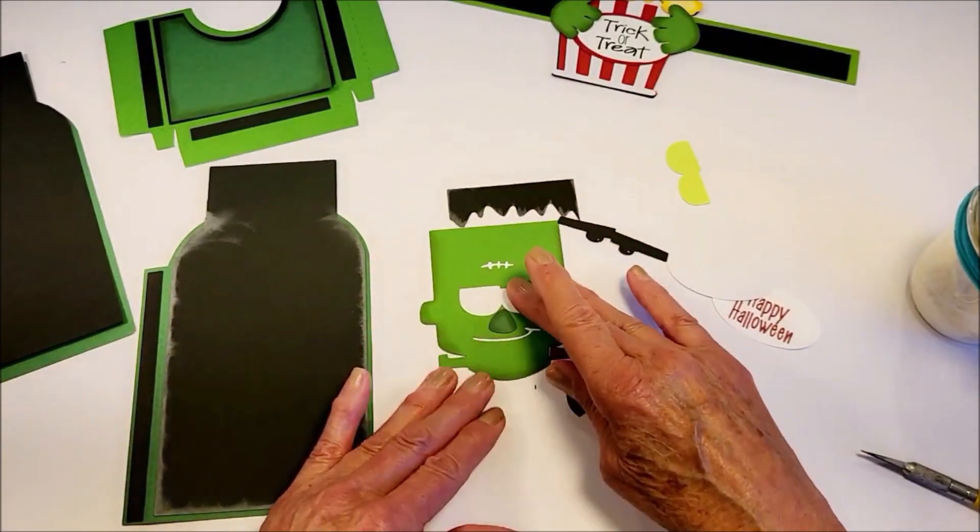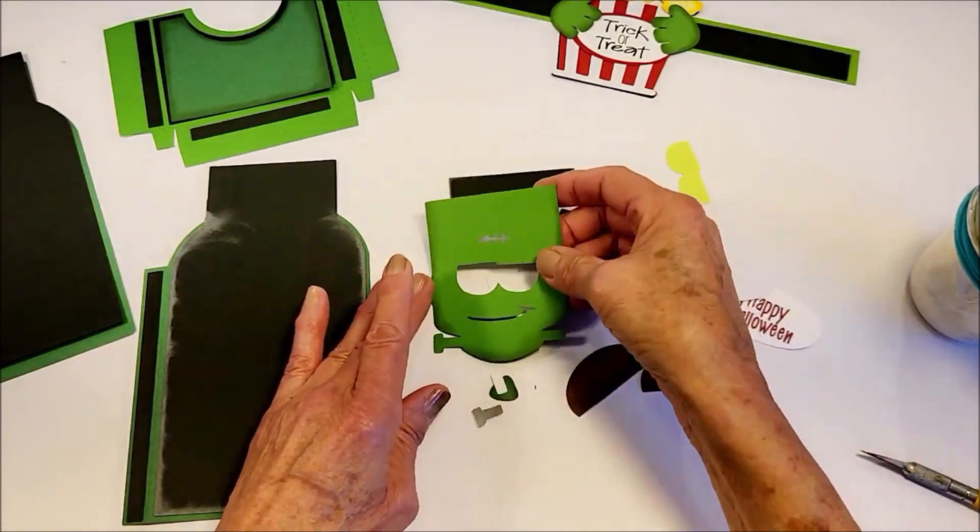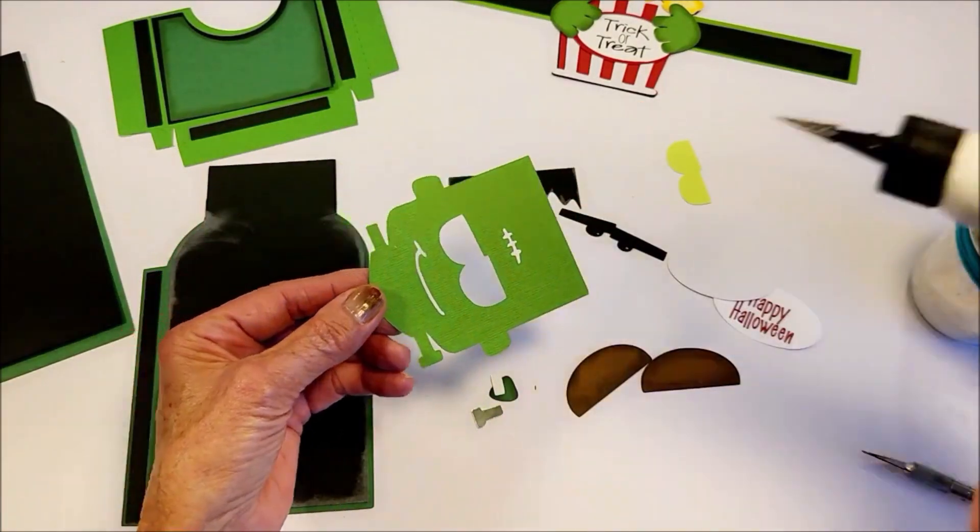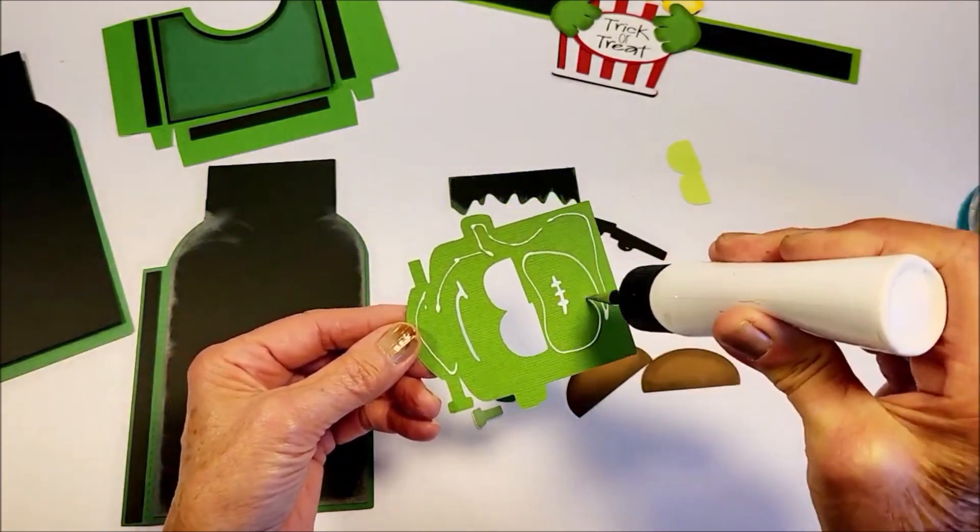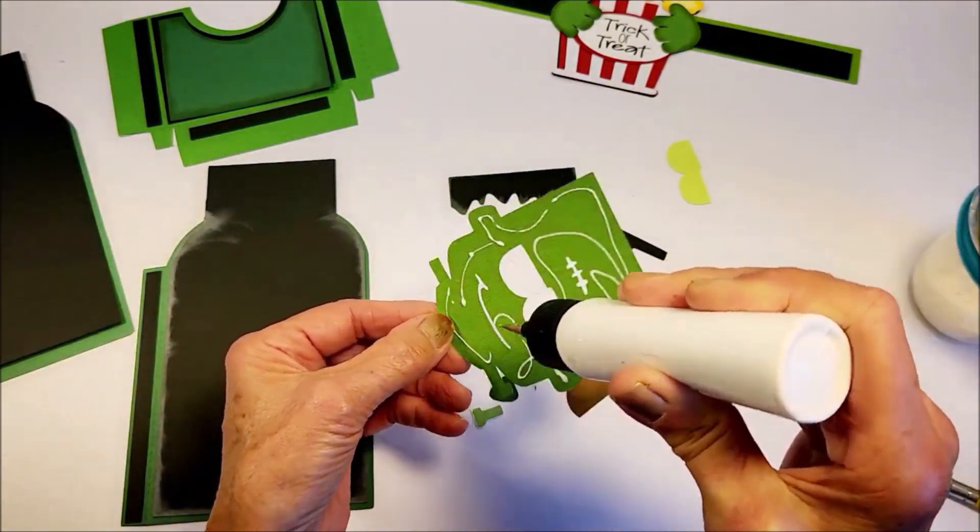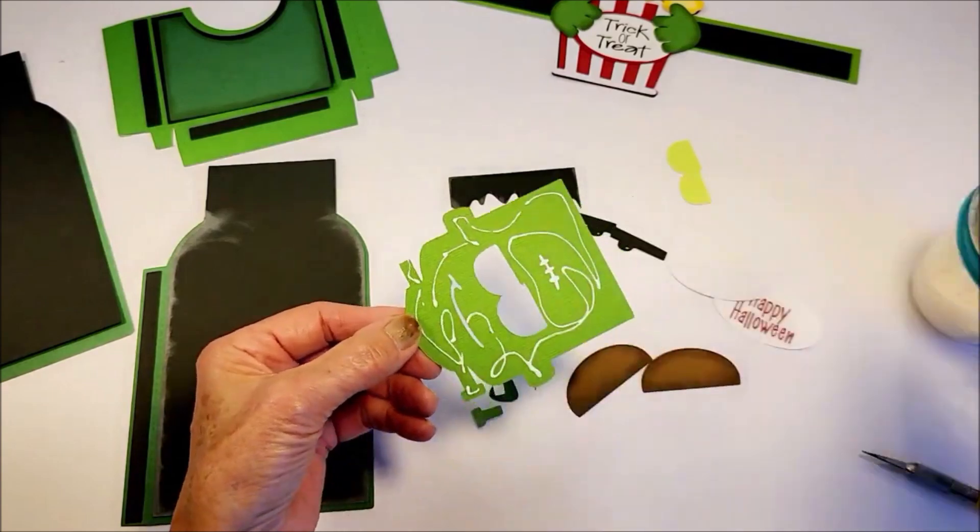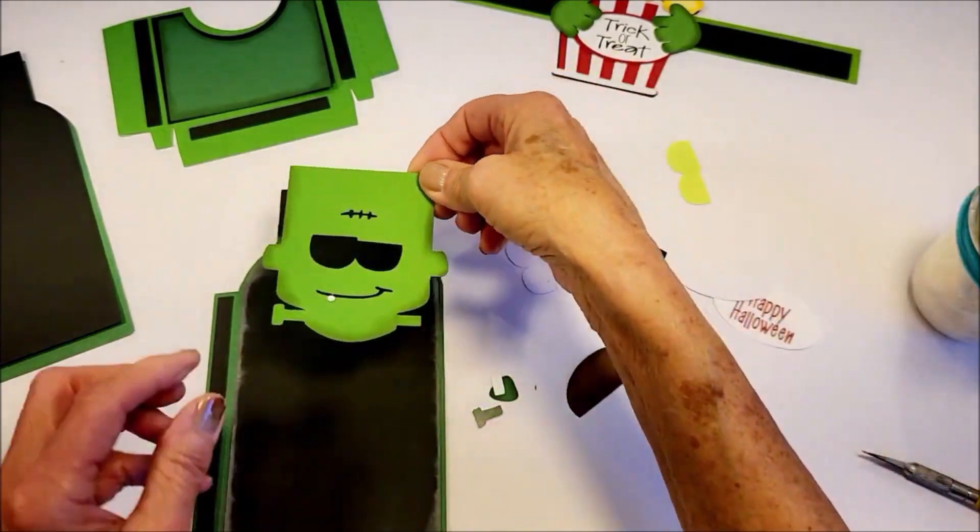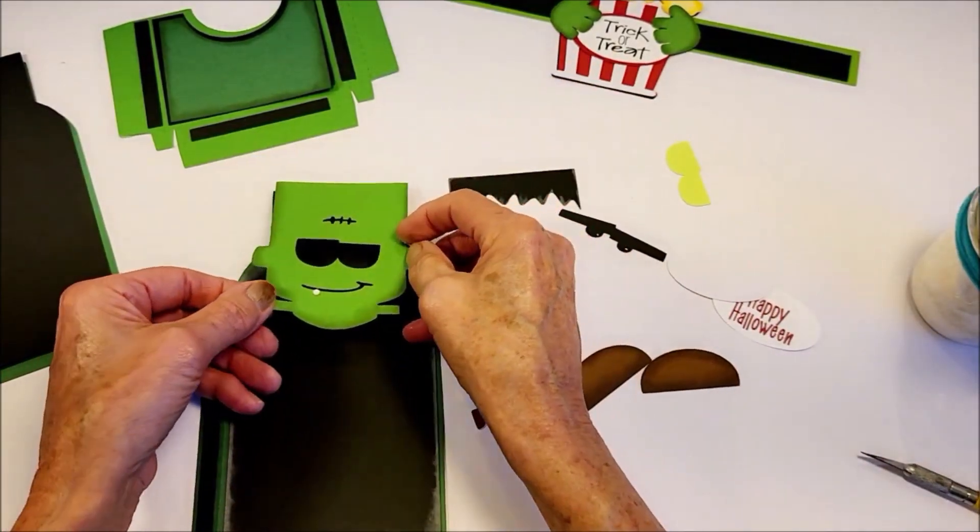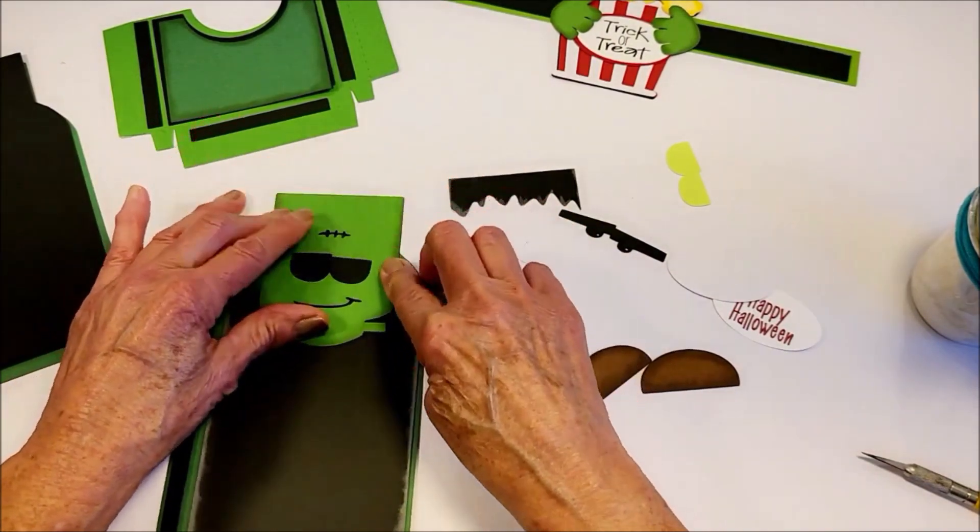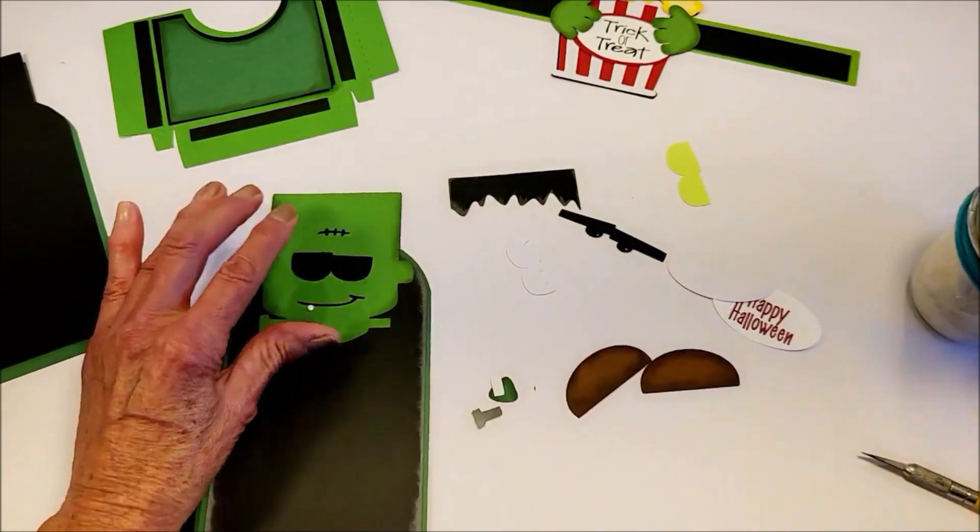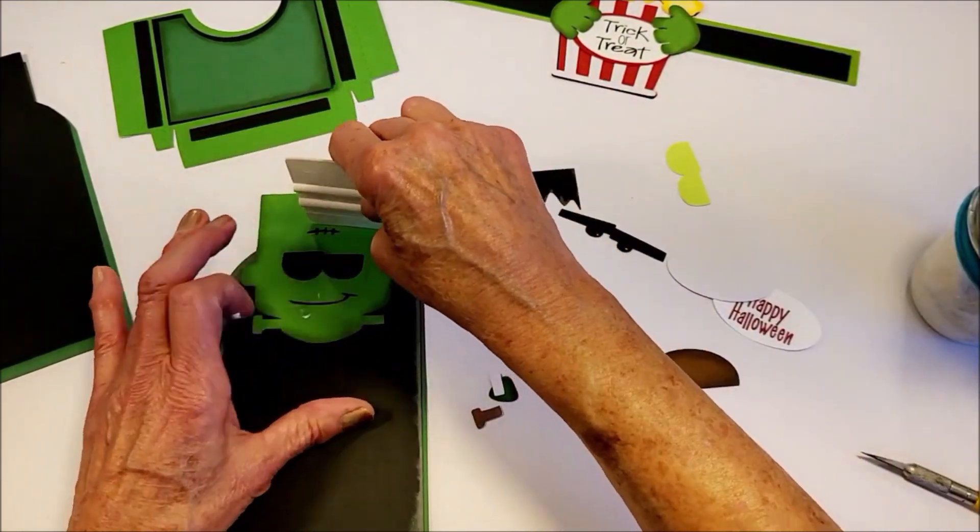I'm going to put together the face now. On this one, on Frankie, I put the face on first. Again I line that up along the very top and these two edges up here, and I'll take my squeegee and squeegee that down.